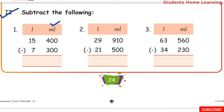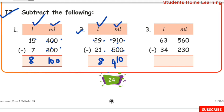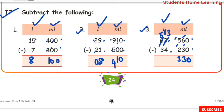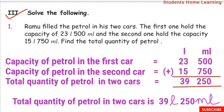Subtract the following. First sum milliliter: 0 minus 0 is 0, 0 minus 0 is 0, 4 minus 3 is 1. Liter subtraction: 15 minus 7 is 8. Answer: 8 liter 100 milliliter. Second sum milliliter: 0 minus 0 is 0, 1 minus 0 is 1, 9 minus 5 is 4. Liter: 9 minus 1 is 8, 2 minus 2 is 0. Answer: 8 liter 410 milliliter. Third sum milliliter: 0 minus 0 is 0, 6 minus 3 is 3, 5 minus 2 is 3. Liter subtraction: 3 minus 4 requires borrowing; borrow gives 13 minus 4 is 9, 5 minus 3 is 2. Answer: 29 liter 330 milliliter.